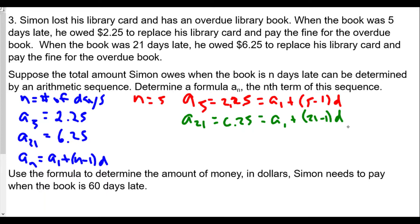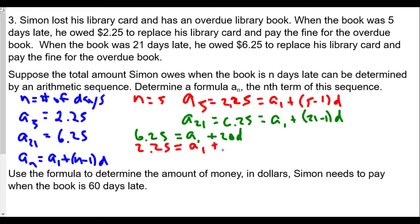So we have a system of equations here. This gives us $6.25 equals a1 plus 20d, and $2.25 equals a1 plus 4d. In this system of equations we can subtract downwards — we get $4.00 on the left side, and the a1 values cancel out, leaving us with 16d.